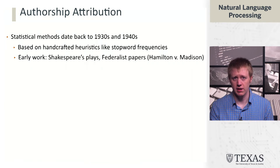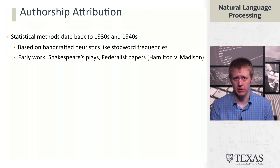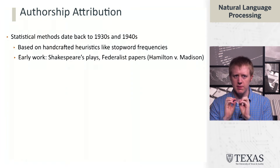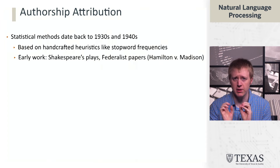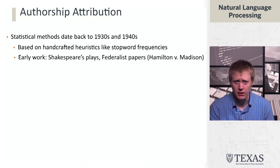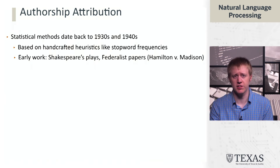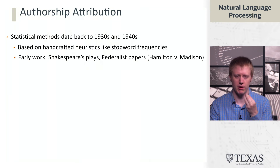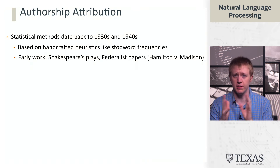The last example is authorship attribution. This is an old problem — people have been using statistical methods for authorship attribution going back to the early 20th century. The idea is that if you have texts and don't know who wrote them, information we typically throw out from text classification — like stopword frequencies and the frequency of different function words — can actually be useful. This has been a historically important task because of famous examples, such as questions about whether Shakespeare wrote all his plays, or disputes about whether Alexander Hamilton or James Madison wrote certain Federalist Papers.